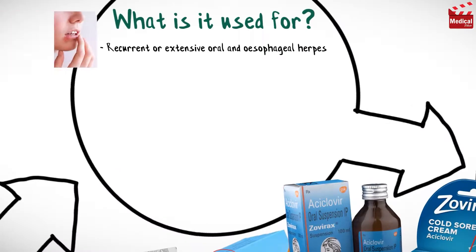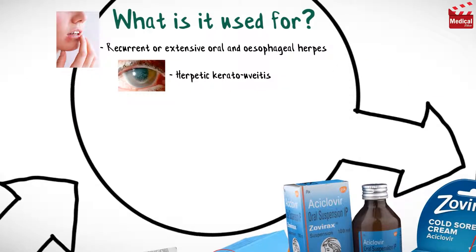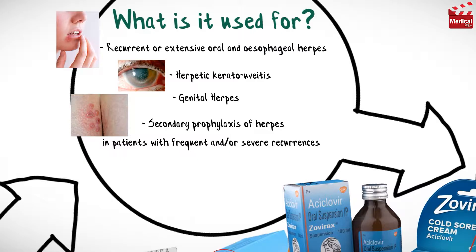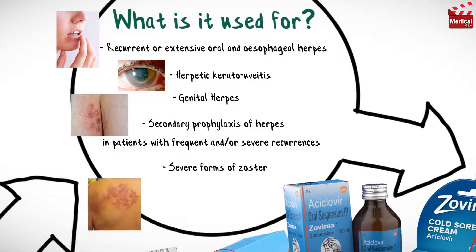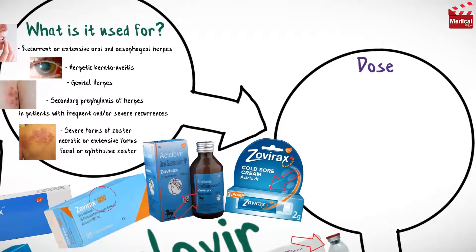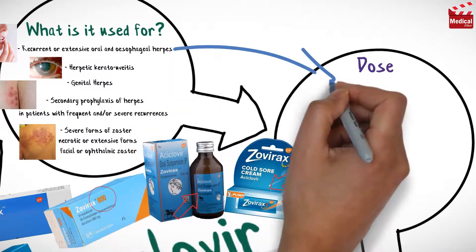Acyclovir is used in the treatment of recurrent or extensive oral and esophageal herpes in immunocompromised patients, treatment of herpetic keratouveitis, treatment of genital herpes, secondary prophylaxis of herpes in patients with frequent and/or severe recurrences, and treatment of severe forms of zoster — necrotic or extensive forms, facial or ophthalmic zoster.